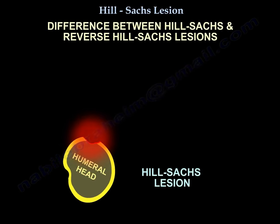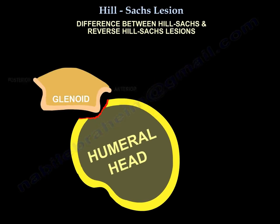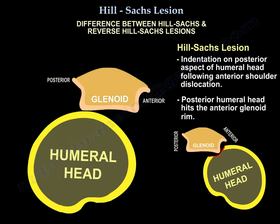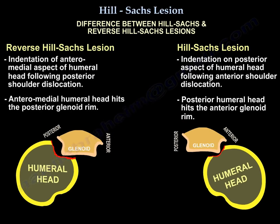What is the difference between a Hill-Sachs lesion and a reverse Hill-Sachs lesion? A Hill-Sachs lesion occurs with anterior dislocation of the shoulder — it is an indentation on the posterior aspect of the humeral head, where the posterior humeral head hits the anterior glenoid rim. A reverse Hill-Sachs lesion is an indentation of the anteromedial aspect of the humeral head following posterior shoulder dislocation, where the anteromedial humeral head hits the posterior glenoid rim.